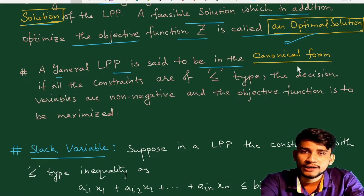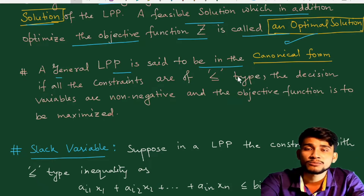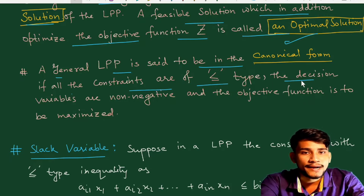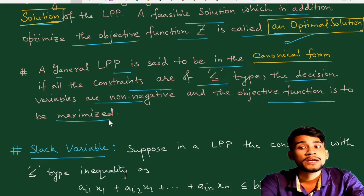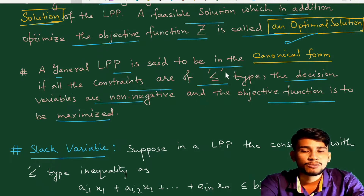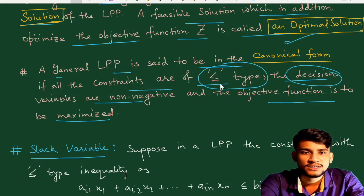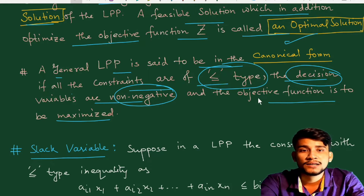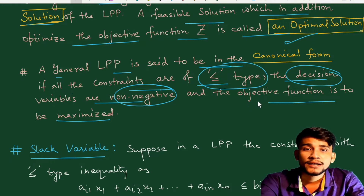A general LPP is said to be in canonical form when: first, all the constraints are of the less-than-or-equal-to type; second, all the decision variables satisfy the non-negativity conditions; and third, the objective function is to be maximized. If these three conditions are given in an LPP, then we say the LPP is of canonical form.